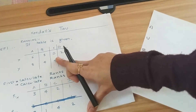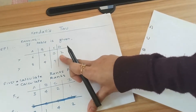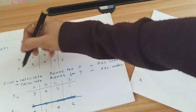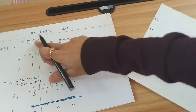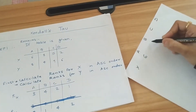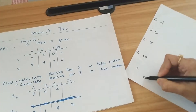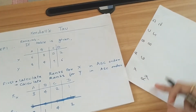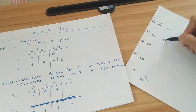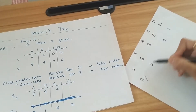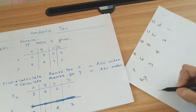We'll consider the problem for Kendall's Tau. The elements of X and Y are given. Now the first step is ranking. For X: 6, 8, 5, 2 — we set the ranks: 2 is rank 1, 5 is rank 2, 6 is rank 3, and 8 is rank 4.